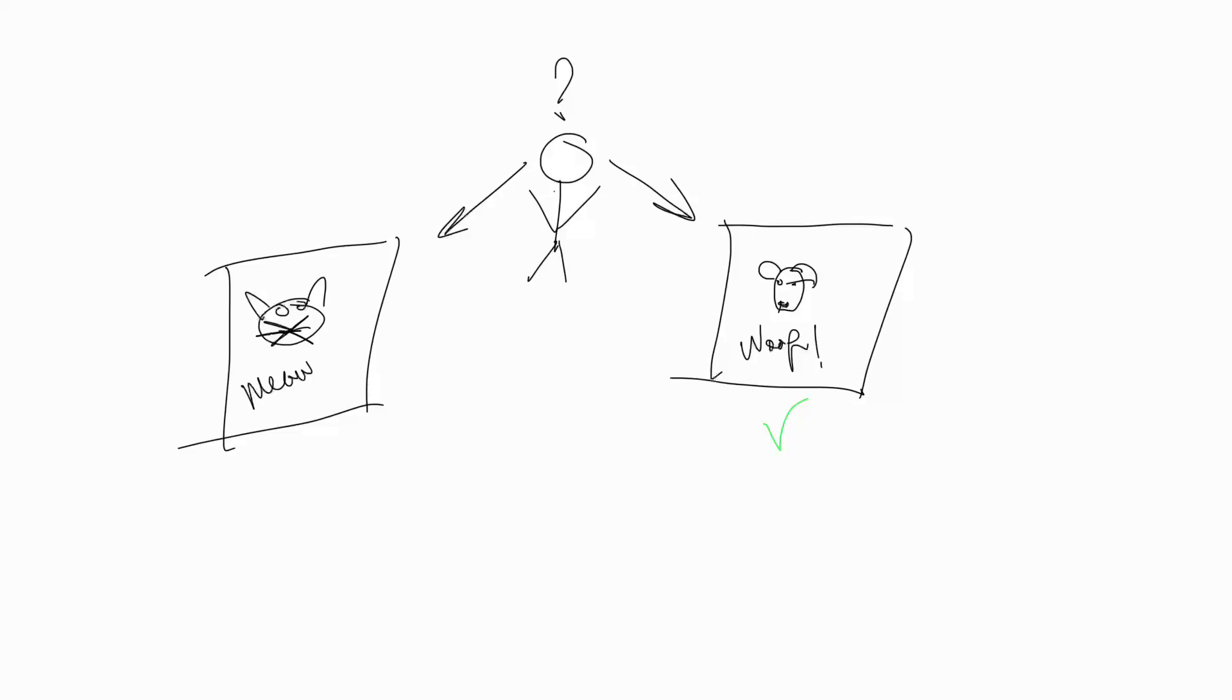That could be classed as positive feedback. Or maybe another time you said cat, and they said no, that's a dog. That would be negative feedback. That process repeated over time and allowed you to become fluent without really ever having to understand how language works. In really simple terms, that's how machine learning algorithms work.